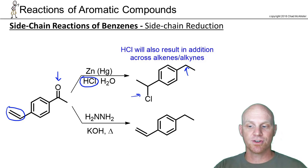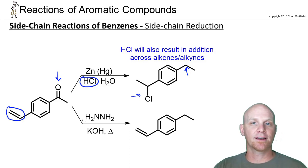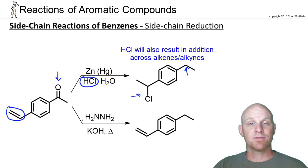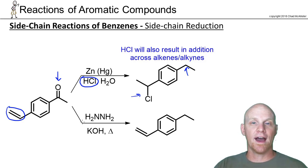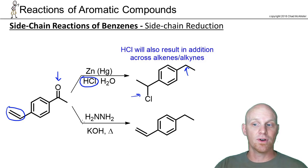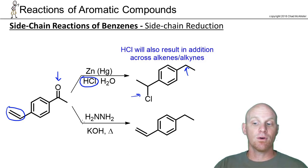With the Wolff-Kishner, you don't have to worry about reaction with an alkene. So when reducing a ketone or aldehyde, ask yourself: do I have an alkene, and do I want to add HCl across it? If yes, use the Clemmensen. If not, use the Wolff-Kishner instead.